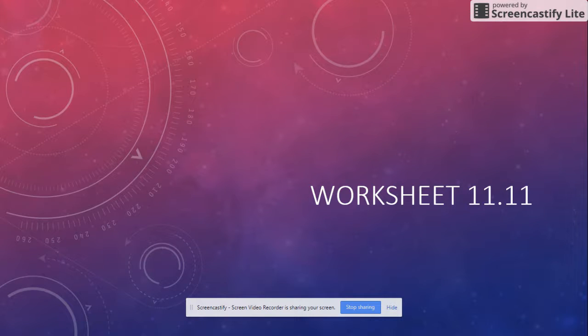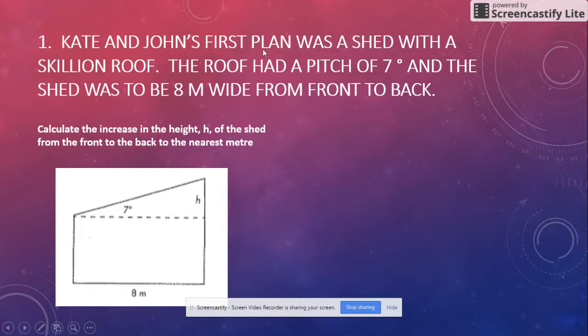Right, so we're now doing worksheet 11.11. This is the last worksheet we're going to do before your assignment. Make sure you've got a nice heading. Kate and John's first plan was a shed with a skillion roof.